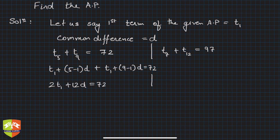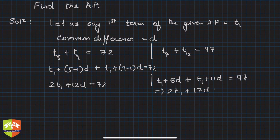On the other hand, t7 is t1 plus 6d, and t12 is t1 plus 11d, and this is equal to 97. So if you simplify this, you'll get 2t1 plus 17d is equal to 97. Let us say this is equation number 1, and this is equation number 2.